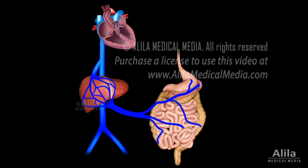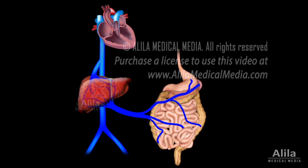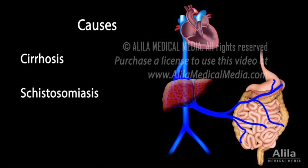Portal hypertension usually results from an obstruction or an increased resistance to blood flow, which may occur before, within, or after the liver. Most commonly, it happens within the liver due to liver damage, in diseases such as cirrhosis and schistosomiasis.